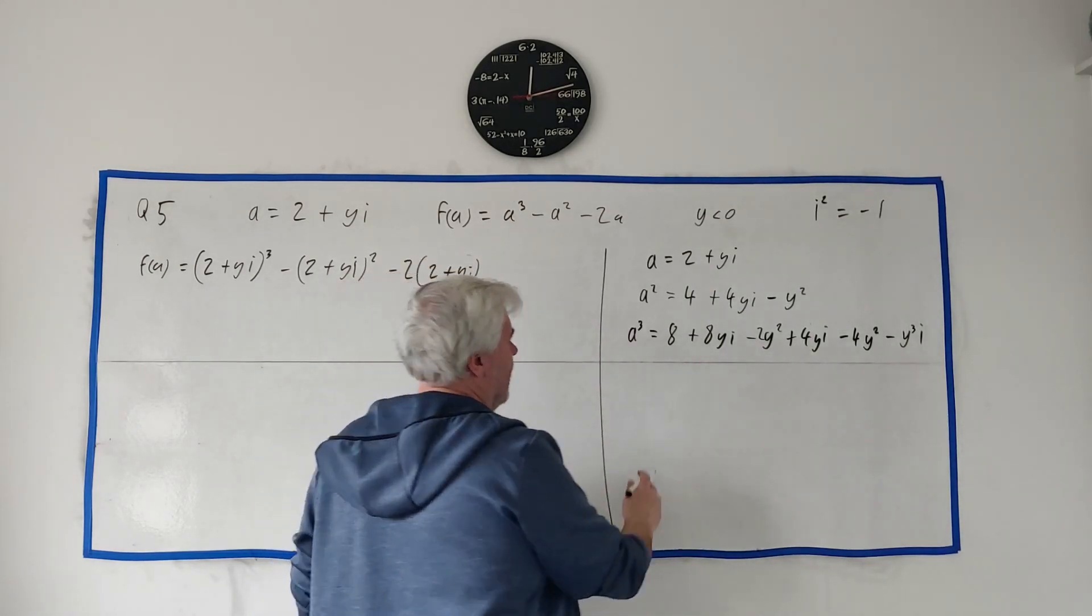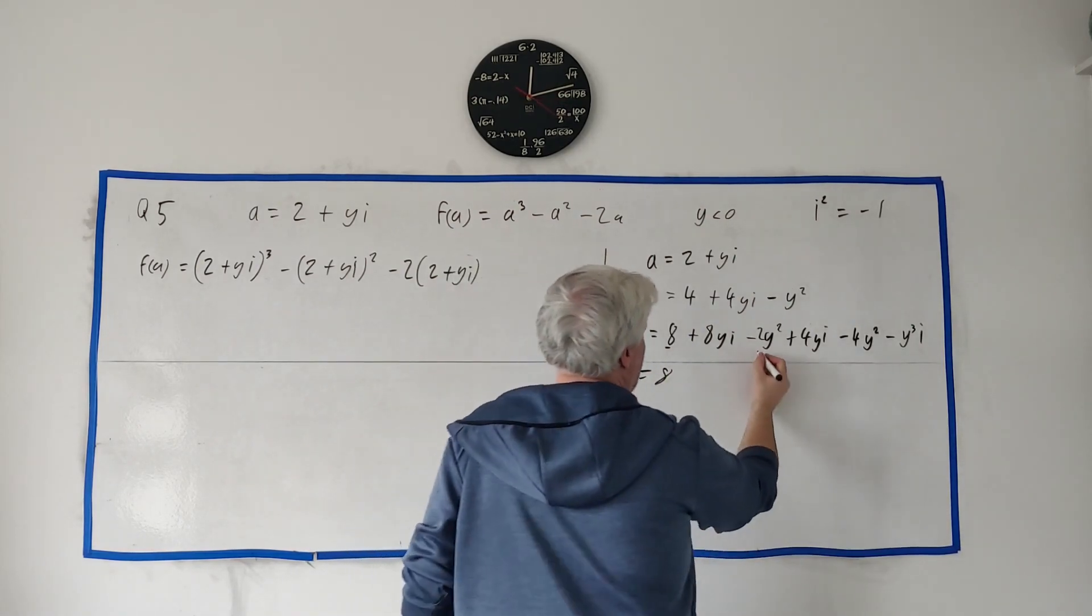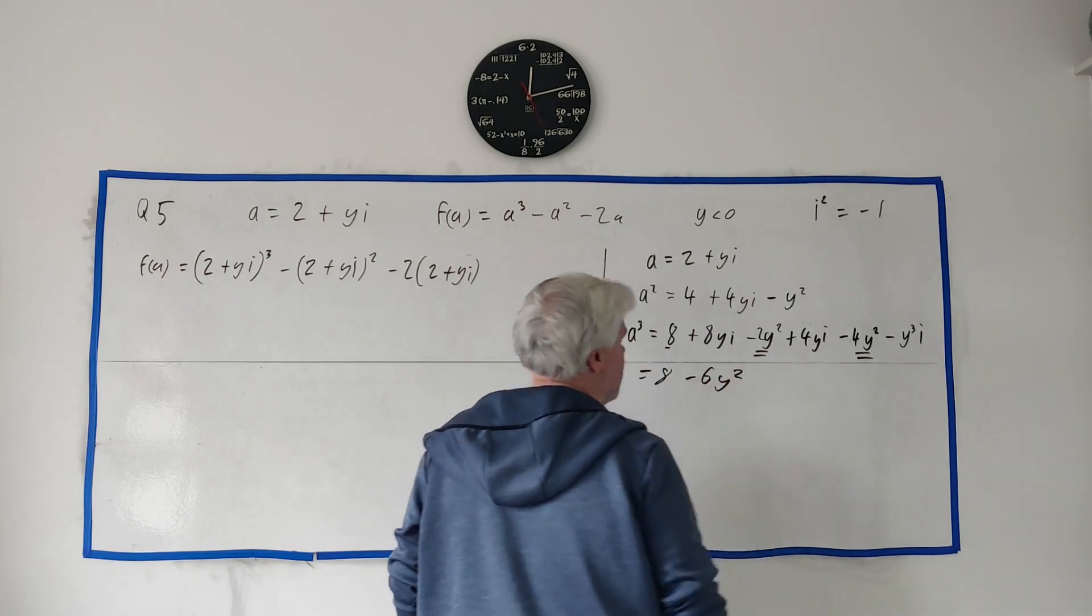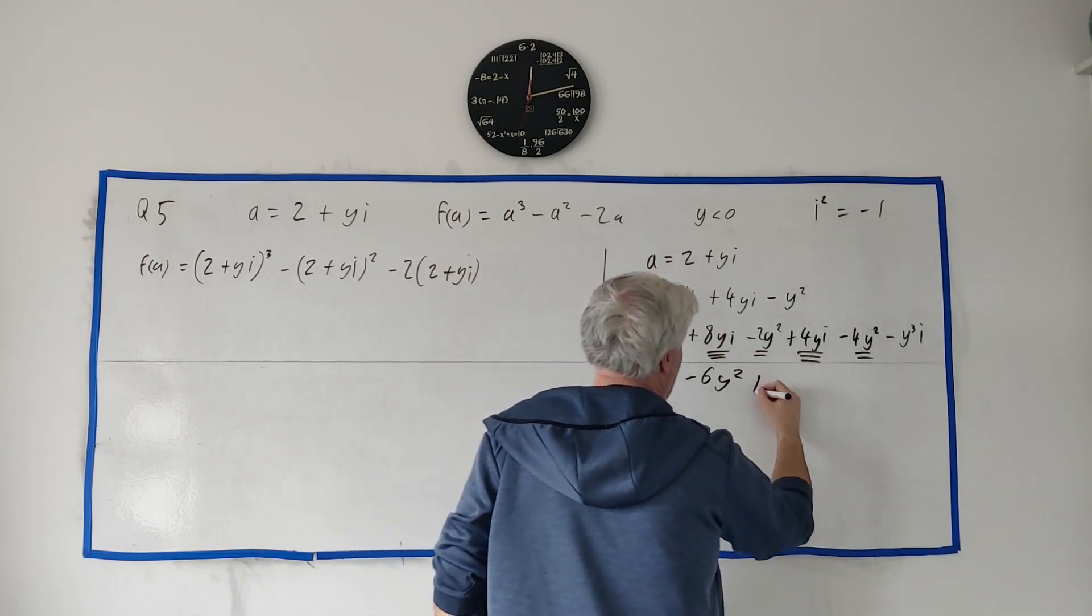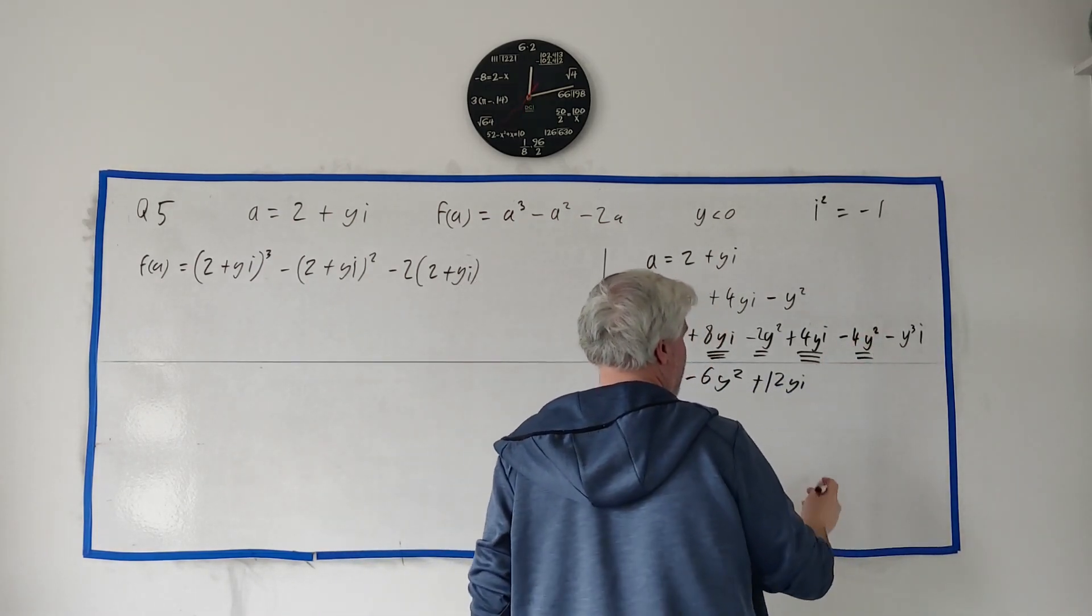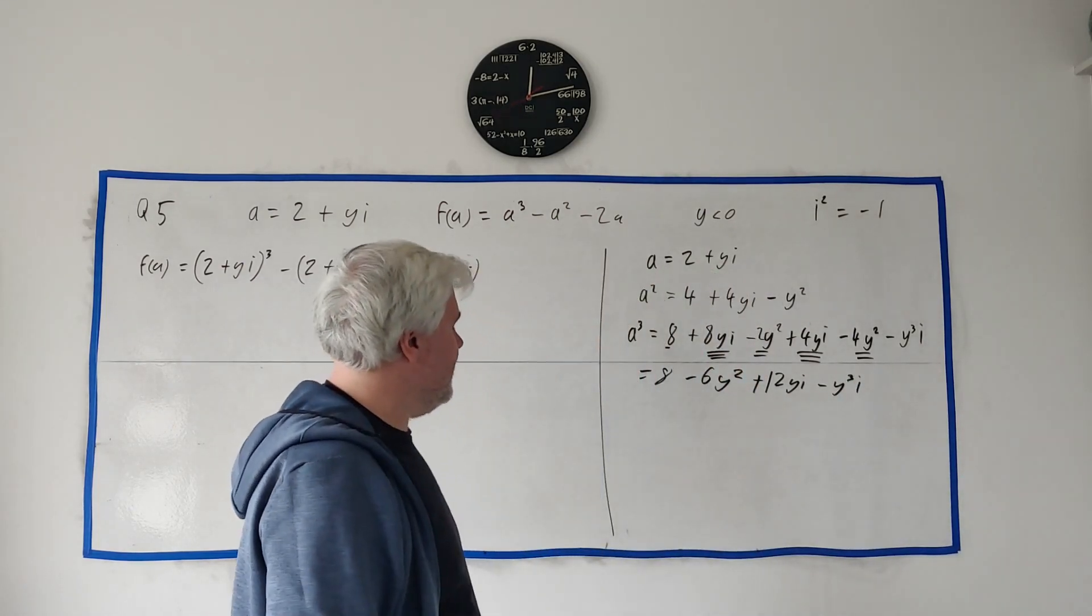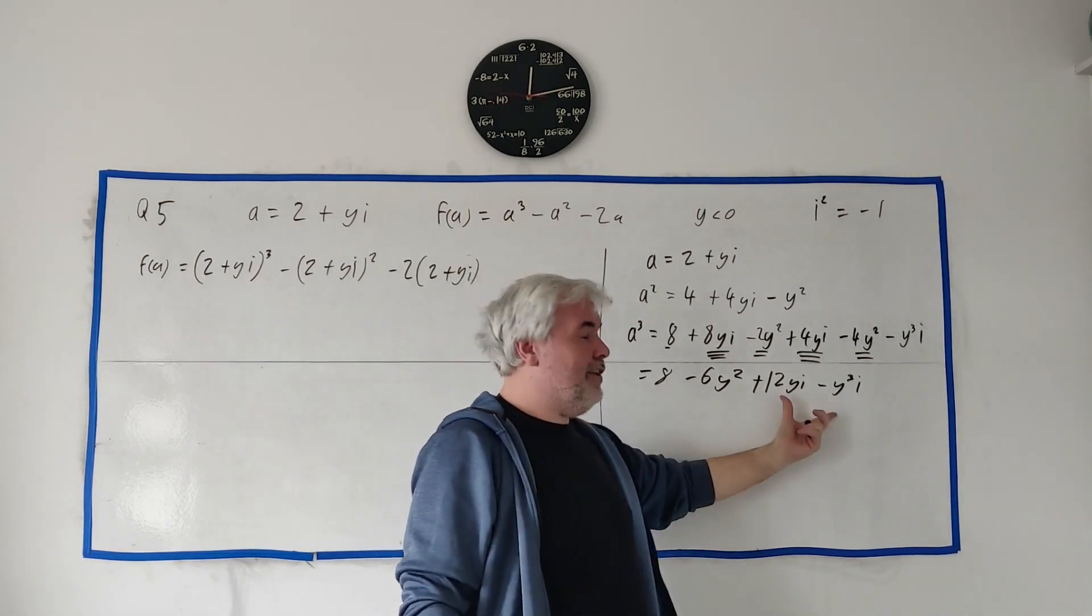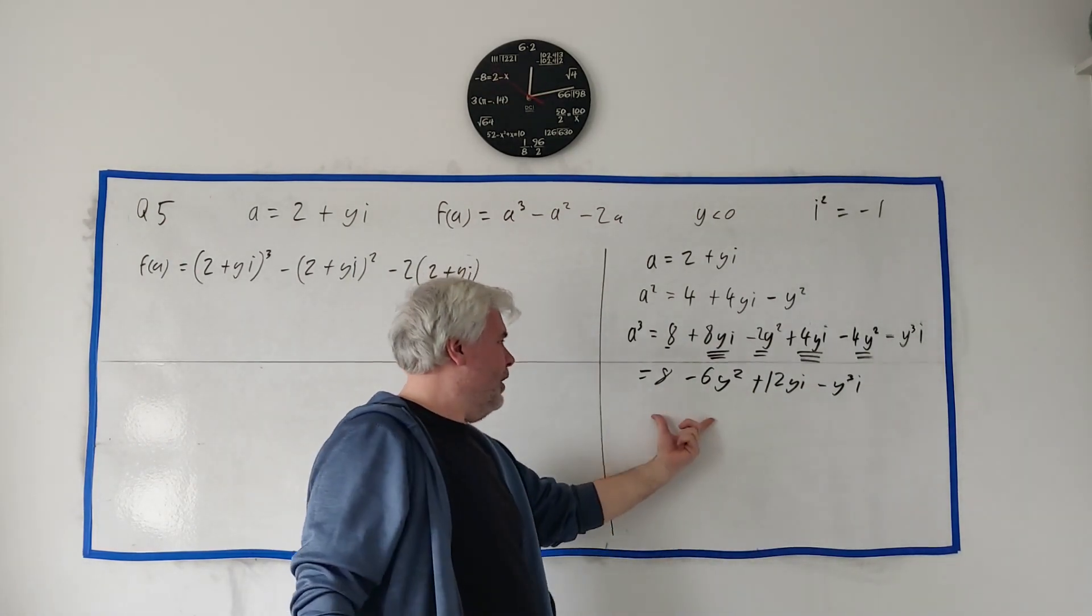Okay, that's the cubed. But we need to clean this up a bit. Get all the like terms. There's only the 8 there. What else is alike? The y squares are like each other. That's minus 6y squares. The yis are like each other. Let's see, there's 12 of them. 12yi. And then the y cubed here. y cubed i. Okay, that's as clean as I can get it. Sometimes I like to take the i out of these two guys. Just so I have the imaginary part on its own. I'll do that at the very end. I won't do it now. And then the real part on its own here.